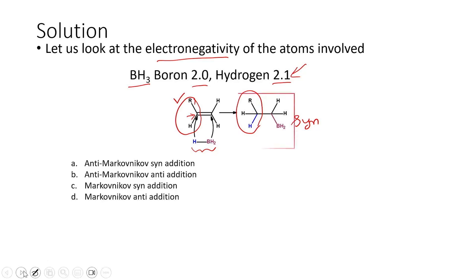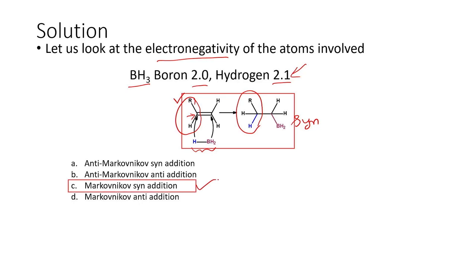The reaction is a Markovnikov addition and this is a syn addition, meaning the BH2 unit and the hydride ion both add from the same side. So that is how we can solve this problem.